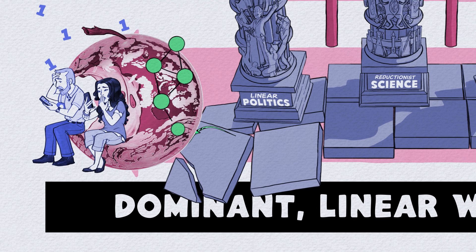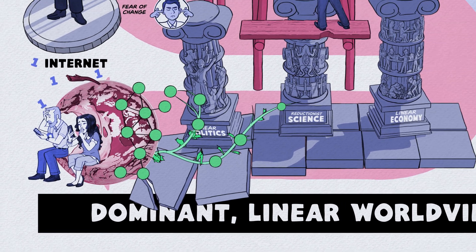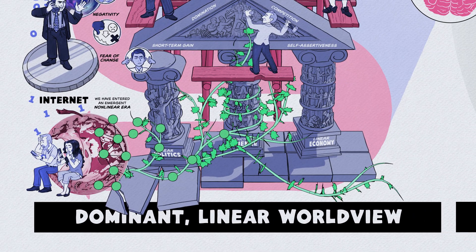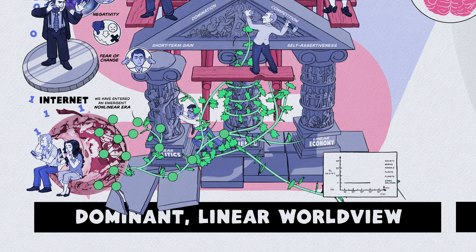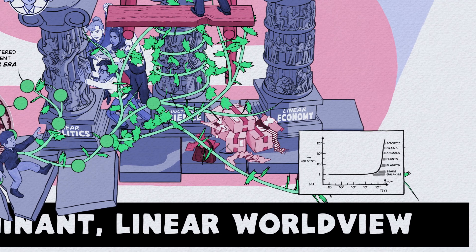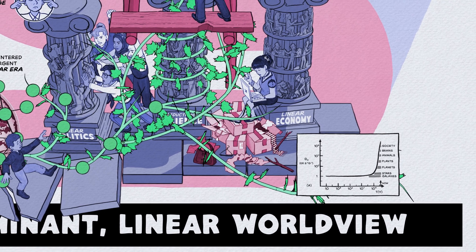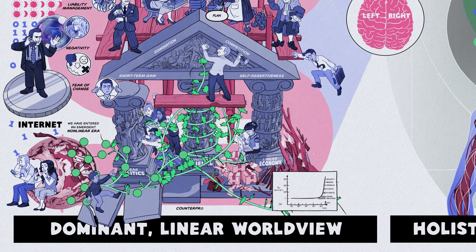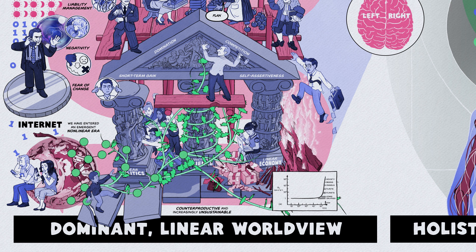With the rise of the Internet, a non-linear network, we have entered an emergent non-linear era, a digital age characterized by rapid change, heightened interconnectivity, unpredictability, and chaos. The main challenge of this emergence is the domination of the linear model becoming counterproductive and increasingly unsustainable, as it's out of sync with the current non-linear digital world.